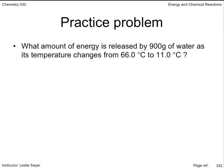Let's start with a practice problem using the equation and the information we've already learned. What amount of energy is released by 900 grams of water as its temperature changes from 66.0 degrees Celsius to 11.0 degrees Celsius? Looking at this problem, we see 900 grams of water releases energy to the surroundings, causing the temperature of the water to drop.